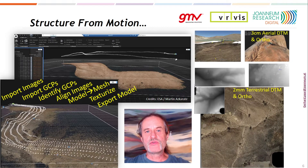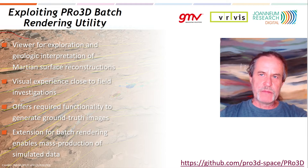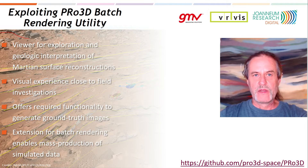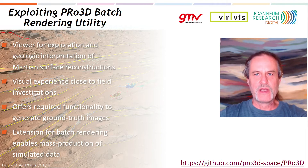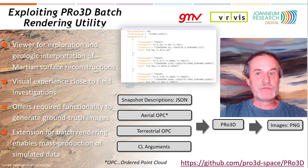This leads in our case to two independent textured models with substantially different resolution and dimensions. For the actual data fusion and rendering, we use PRO3D, which stands for Planetary Robotics 3D Viewer. It has been designed for the exploration and geologic interpretation of planetary surface reconstructions, with a visual experience close to field investigations. PRO3D enables generating large volumes of ground truth images using an extension that allows batch rendering. The workflow starts with the definition of so-called snapshots; then 3D datasets are imported as ordered point clouds, a hierarchical data structure which makes rendering much more efficient. PRO3D then executes the individual snapshots, generating the simulated ground truth images, each of which is also known in its precise geometry.